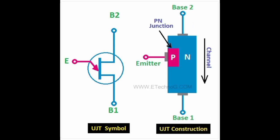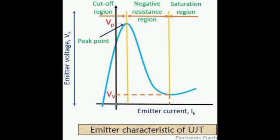In the construction of UJT, it consists of an N-type silicon semiconductor bar with an electrical contact on each end. The terminals of these connections are called base terminals B1 and B2. Near to base B2, a P-N junction is formed between a P-type emitter and the N-type silicon bar.